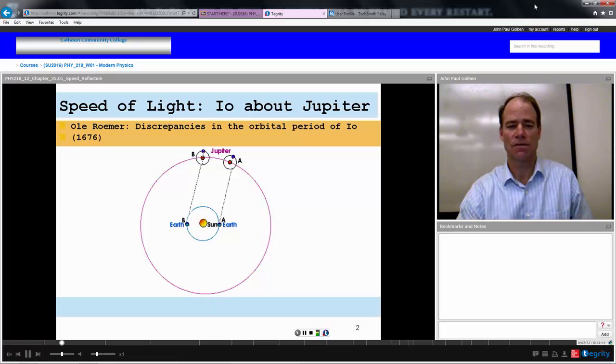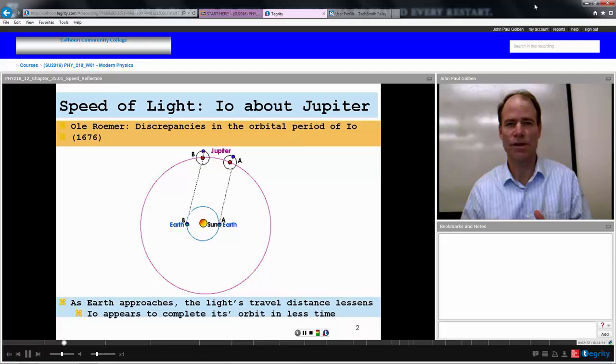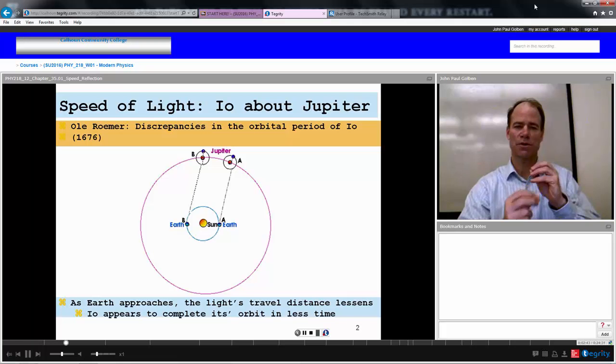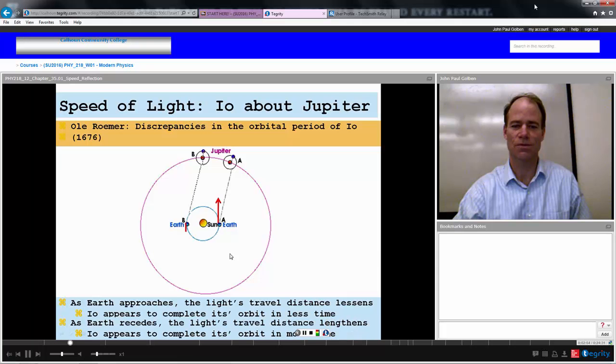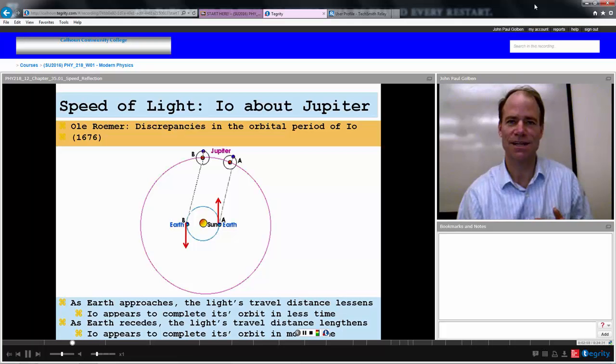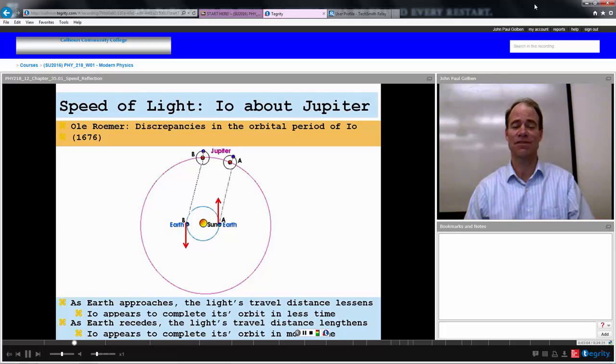For instance, since we know that the Earth is going around the Sun at 30,000 meters per second, if you were measuring this orbit of Io around Jupiter, over the course of 1.75 days, if Earth was on the side of the Sun like this, and moving away, either toward or away, if we were moving away at 30,000 meters per second, then over the course of a day and three quarters, it could move a pretty good distance, and even light would have to travel that extra distance to get to your eye.